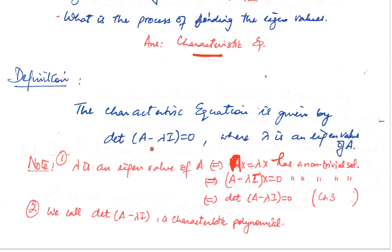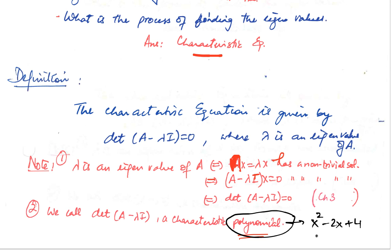I'm going to show you with the help of an example what I just said — that this determinant is the characteristic polynomial. A polynomial is something like x squared minus 2x plus 4, or x to the power 5 minus 2x cubed plus 3. When I say this is a characteristic polynomial, lambda will be replacing x. Let's look at an example to get familiarized with it.